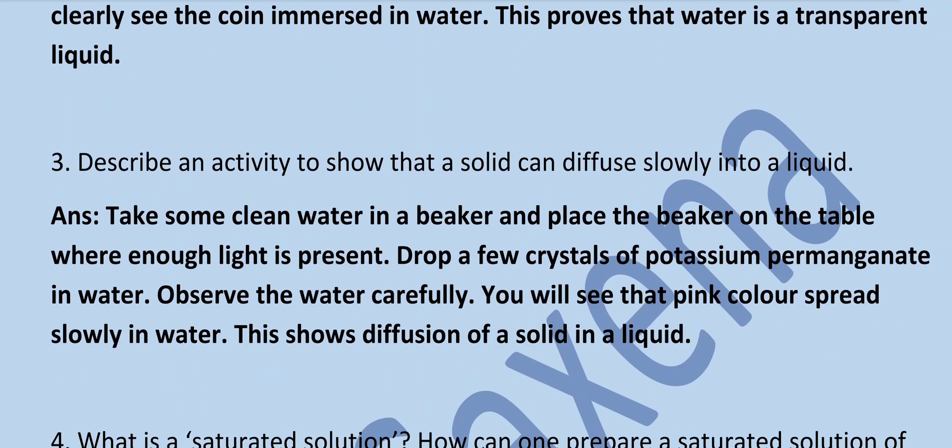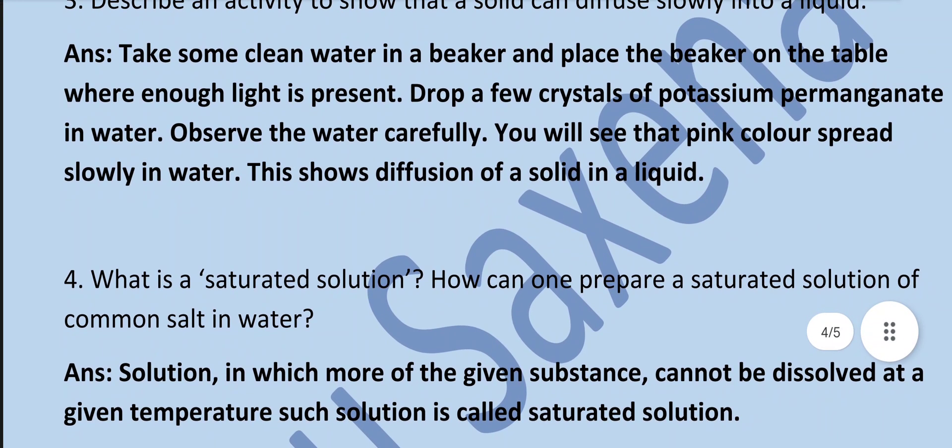Describe an activity to show that a solid can diffuse slowly into a liquid. Take some clean water in a beaker and place the beaker on the table where enough light is present. Drop a few crystals of potassium permanganate in the water and observe carefully. You will see that pink colour spreads slowly in the water. This shows diffusion of a solid in a liquid.